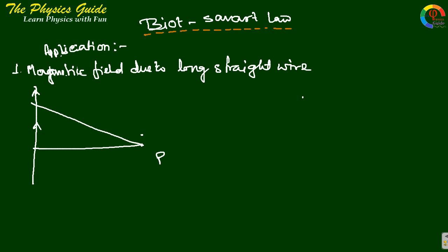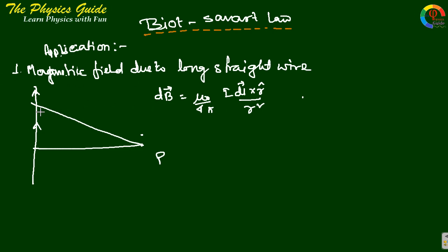Biot-Savart law can be used to find the magnetic field due to a long straight wire. We know from Biot-Savart law that dB equals mu₀ by 4π times I dL cross R by R squared. In our problem, we have to measure the magnetic field due to a straight current-carrying element carrying current I at point P at a perpendicular distance X.